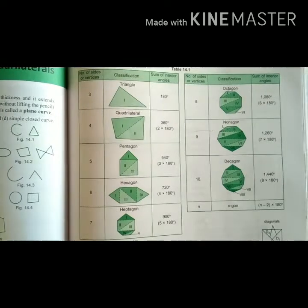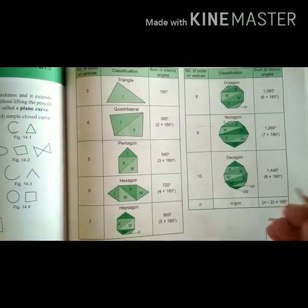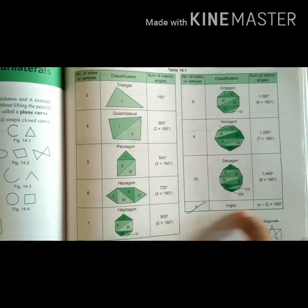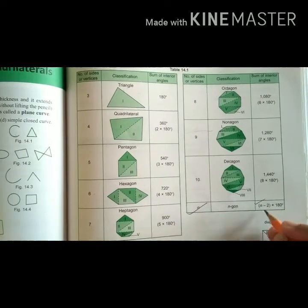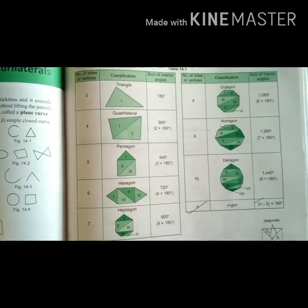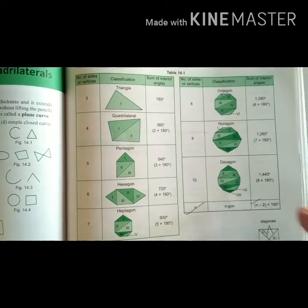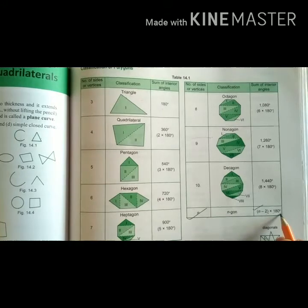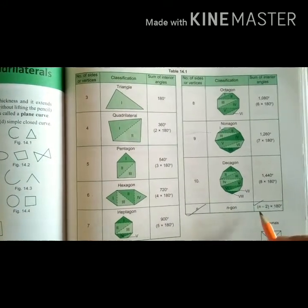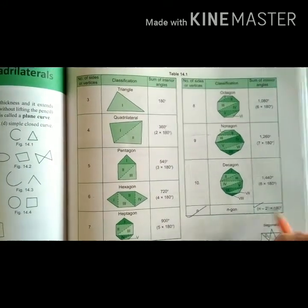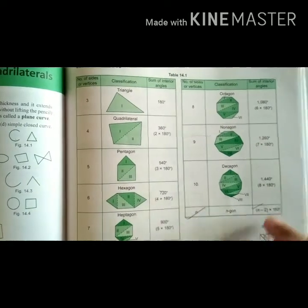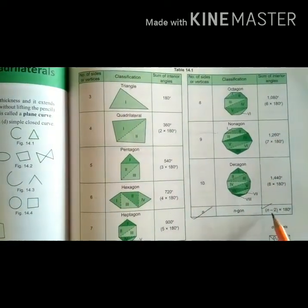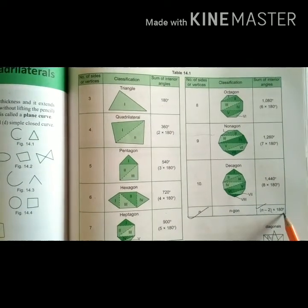Now, how do we remember the sum of interior angles? We use a formula for all sides. For example, if there are 10 sides: 10 minus 2, multiply by 180. For 4 sides: 4 minus 2, multiply by 180. So we do not need to remember all individual angle sums — we learn one formula: n minus 2, multiplied by 180.